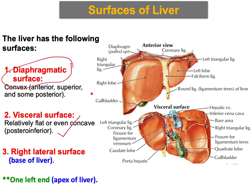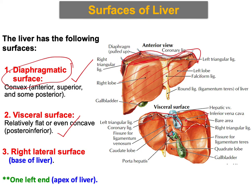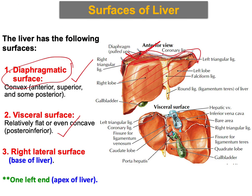The diaphragmatic surface is the anterior and superior surface — that's under the diaphragm — and a little bit of the posterior surface. All three of these parts represent the diaphragmatic surface. Now, this posterior area, which is part of the diaphragmatic surface — between the diaphragm and the liver posteriorly — is the bare area of the liver. You can see there is no peritoneum; it is not covered by peritoneum. The peritoneum is reflected here, so this area is against the diaphragm from the back.